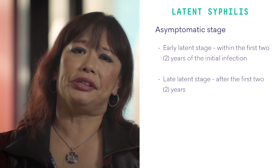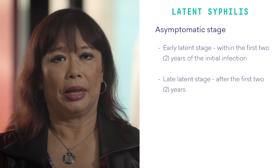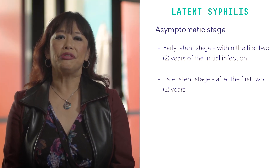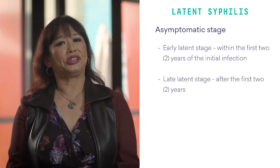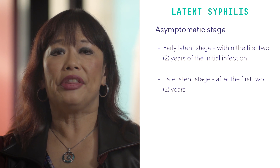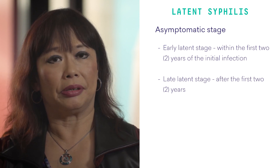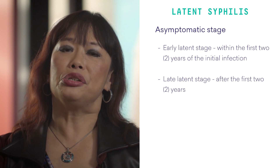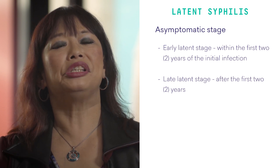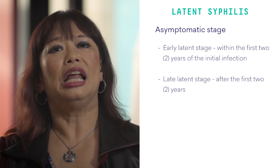Latent syphilis is the long asymptomatic stage of syphilis, divided into early latent and late latent. Early latent syphilis occurs within the first two years of the initial infection, with absence of features of primary and secondary syphilis and a negative syphilis screen in the preceding two years, or a fourfold increase in RPR titre on subsequent testing without symptoms. Late latent occurs after the first two years and cannot be proven to have been acquired within the preceding two years. It is important to exclude cardiovascular and neurosyphilis by physical examination when diagnosing late latent syphilis.